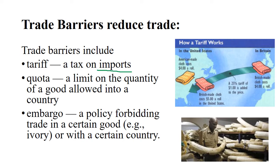Embargoes are policies that outlaw trade in a certain product. One example is ivory, which is made from elephant tusks. Ethical groups decided to outlaw ivory trade because it is typically harvested in an inhumane manner — the elephant bleeds to death when the tusk is removed. You can buy antique ivory that predates the embargo, but not new ivory.